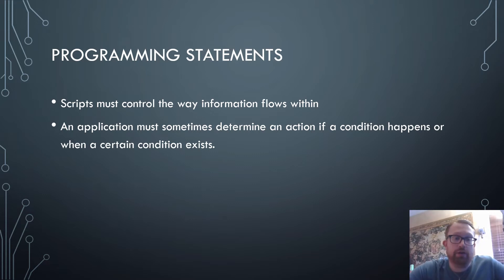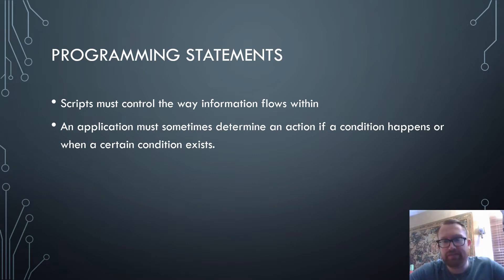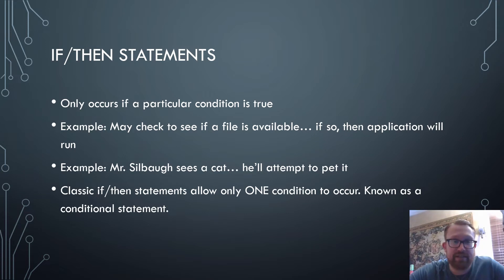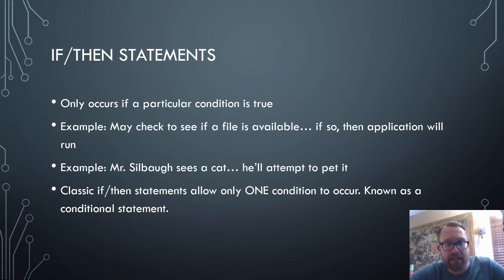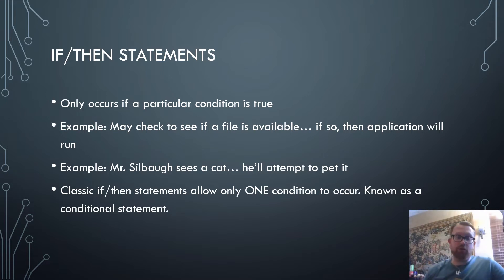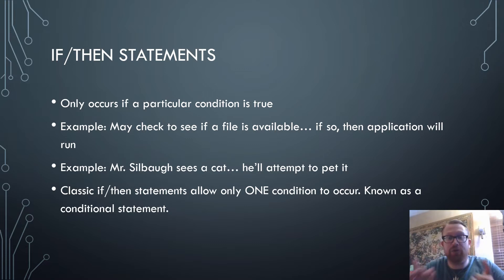Programming statements: scripts control the way information flows, and an application must sometimes determine an action when a condition exists. The first is if-then statements — these only occur if a particular condition is true. For example, a computer may check if a file is available and if so, that file will open and run. In simpler terms: if I see a cat, I'll attempt to pet the cat. Classic if-then statements allow only one condition to occur, known as a conditional statement.